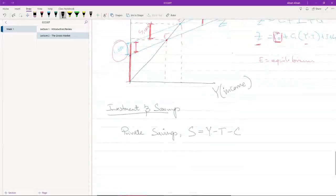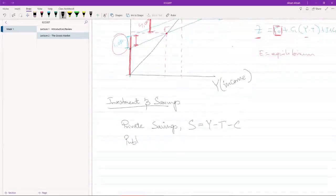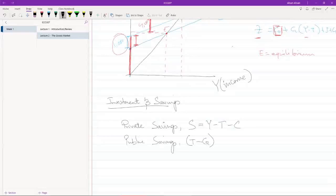Okay, now let's look at public savings. Whenever we say public, we effectively mean the government. So the government savings is T minus G, where T is tax and G is, as we've seen, government spending.